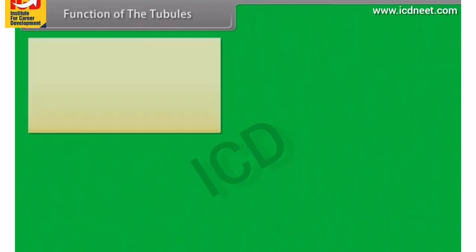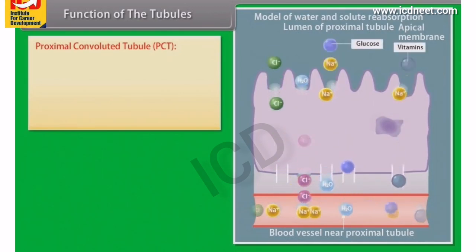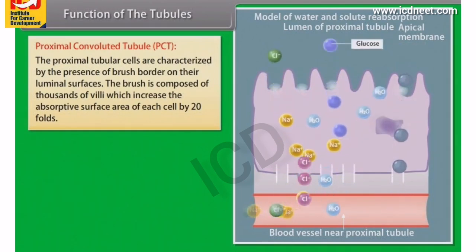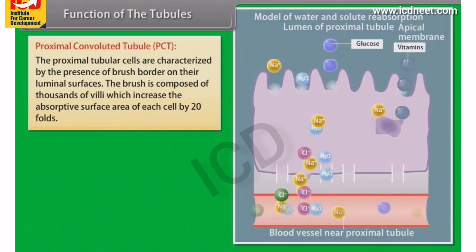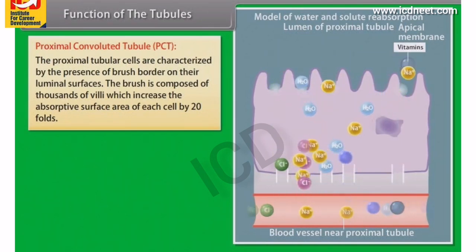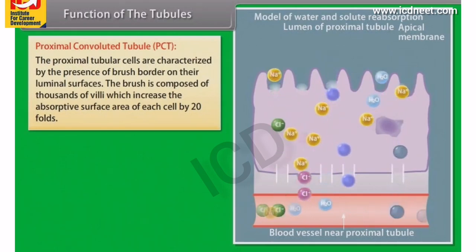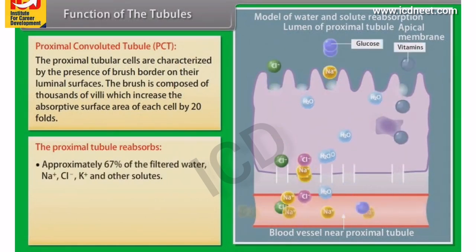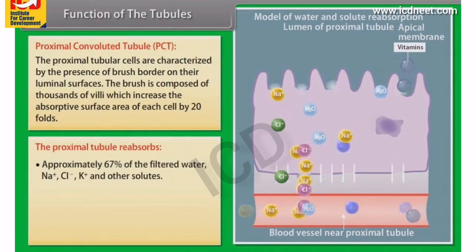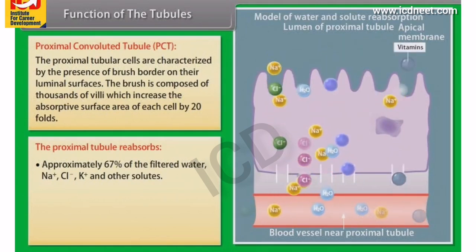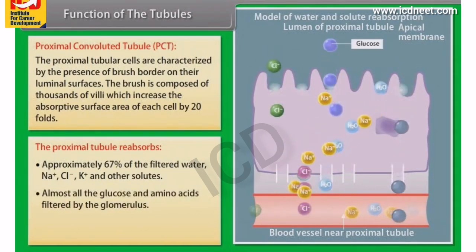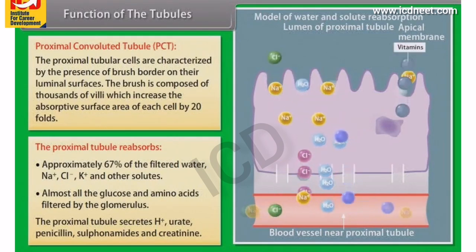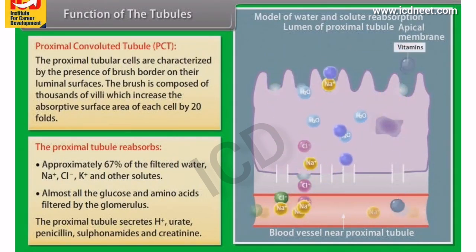The proximal convoluted tubule (PCT) cells are characterized by a brush border on their luminal surfaces, composed of thousands of villi, which increases the absorptive surface area of each cell by 20 folds. The proximal tubules reabsorb approximately 67% of the filtered water, Na⁺, Cl⁻, K⁺ and other solutes, and almost all the glucose and amino acids filtered by the glomerulus. The proximal tubules also secrete H⁺, urate, penicillin, sulfonamides and creatinine.